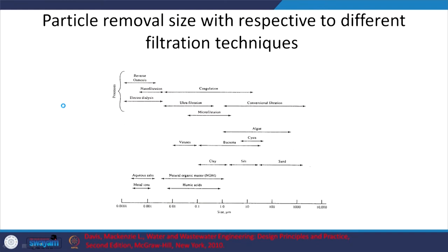Looking at the graph, we have sand and silt, and we are focusing on conventional filtration for now. Conventional filtration can capture some bacteria, silt, and sand, and depending on adsorption, some other particles such as NOM adsorbed onto sand or clay particles can also be removed. Depending on the type of filtration, removal can be achieved down to 0.1 micrometers, but the typical cutoff for conventional filtration is just above 1 micrometer.